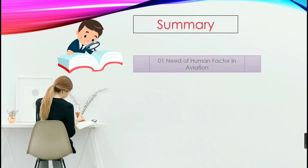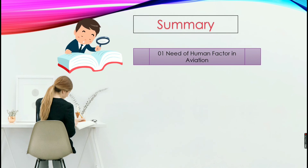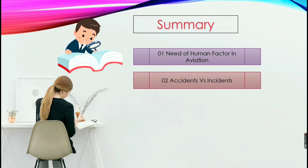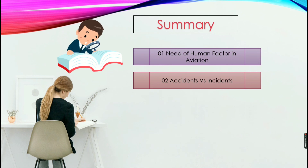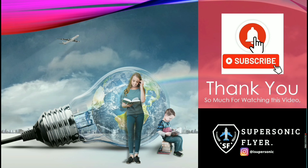In summary for this sub-module: we have seen the importance of human factors in aviation maintenance and noted major incidents like Aloha Airlines Flight 243. Human factors are the most important consideration in aviation. In an accident, damage to both property and personnel occurs, while in an incident only property damage occurs. For DGCA examinations, remember that near hits and near misses are also called incidents. Murphy's Law states: anything that can go wrong will go wrong.